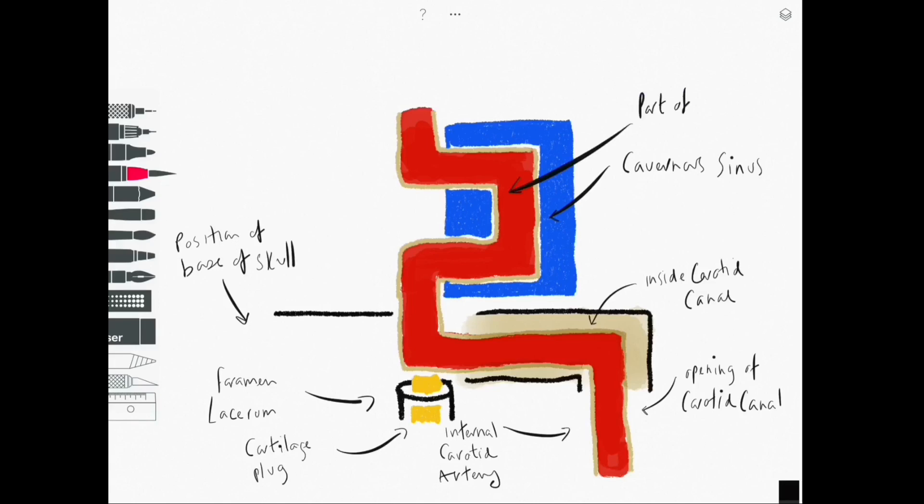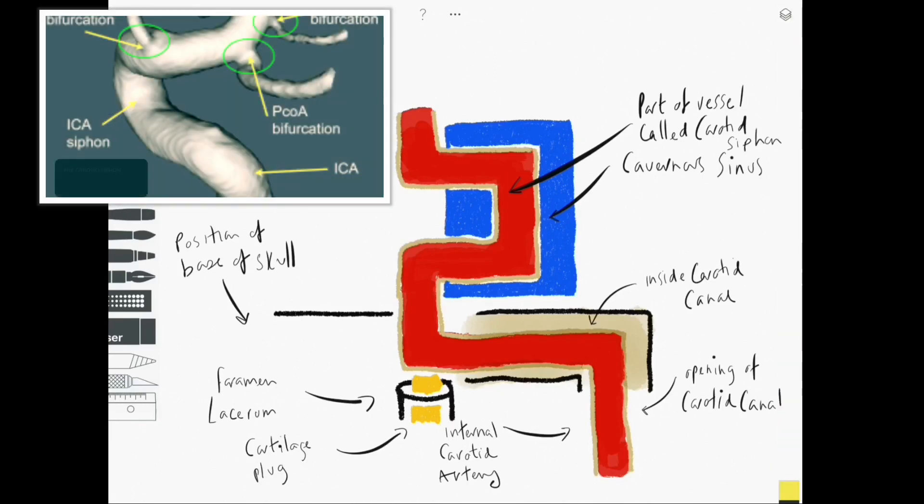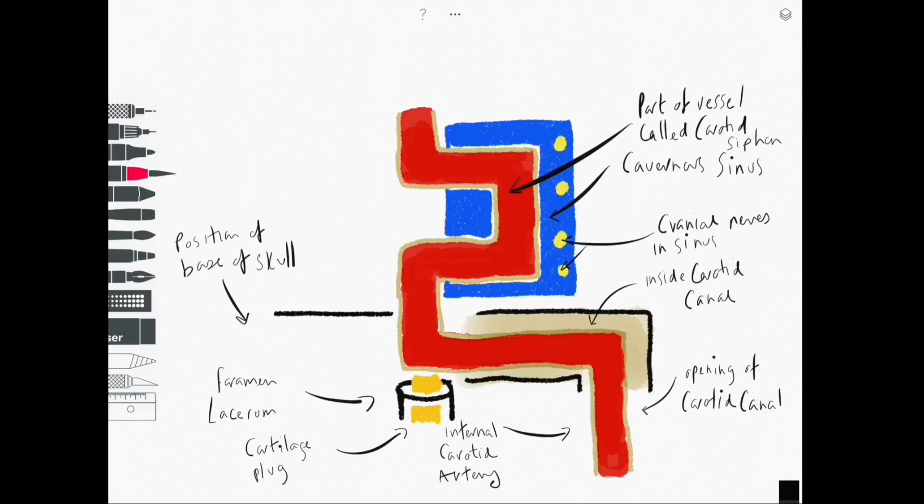So the carotid siphon is probably most frequently referred to on imaging and the imaging would be an angiogram. So we can see an angiogram coming on screen now and we can also draw on those cranial nerves that pass through the cavernous sinus.